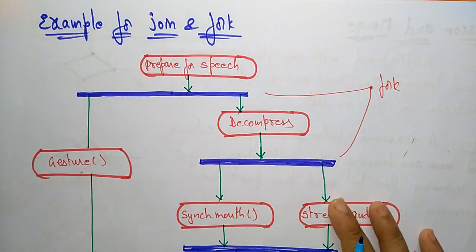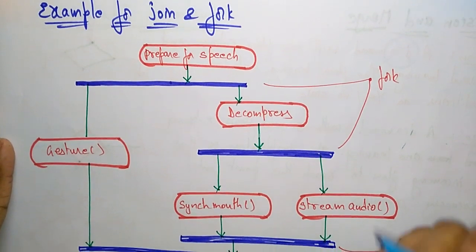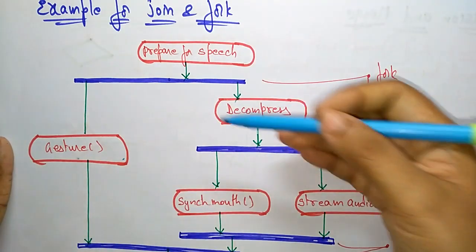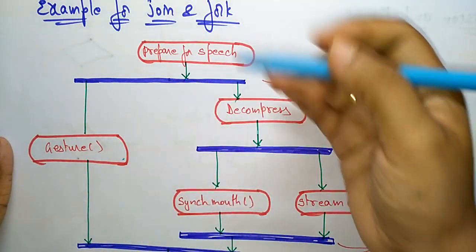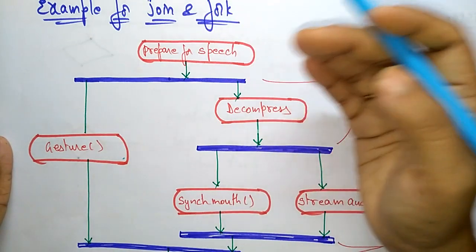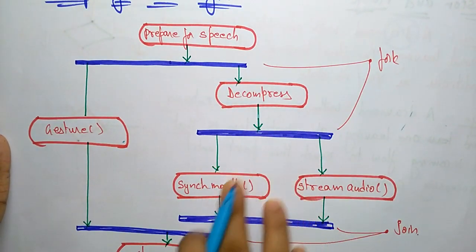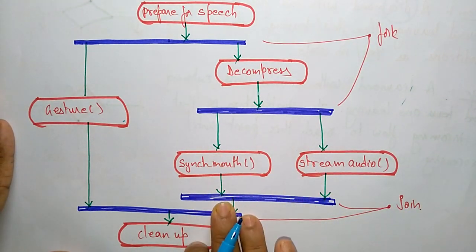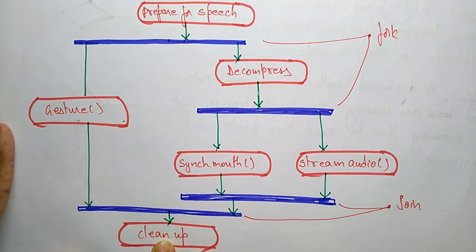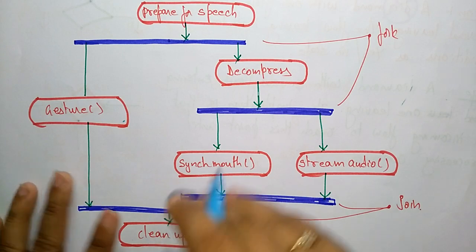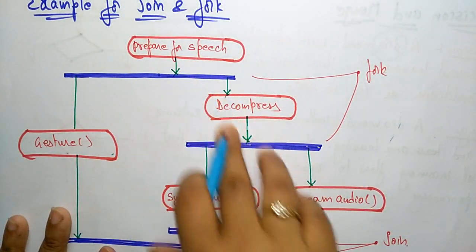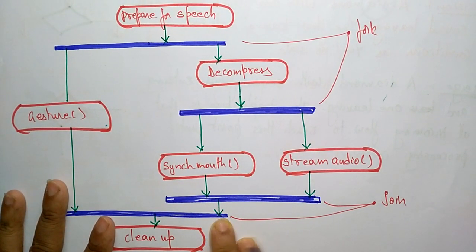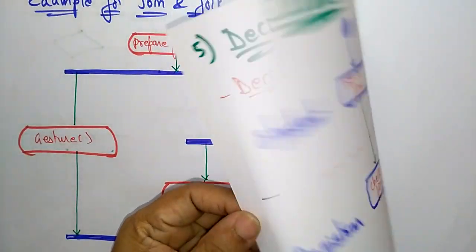Here is a simple example of join and fork. If you want to prepare a speech, you distribute the work — dividing it into gestures and decompression. The decompression is further split into synchronous mouth and stream audio using a fork. After both complete their work, they combine and join, giving a clean output. Whenever parallel work is starting that is a fork, and whenever parallel work is combining into one output that is a join.